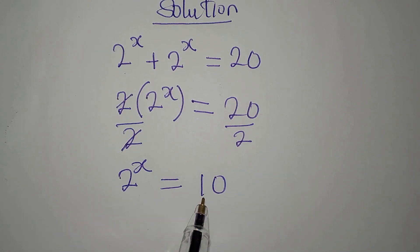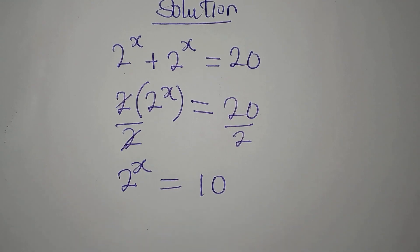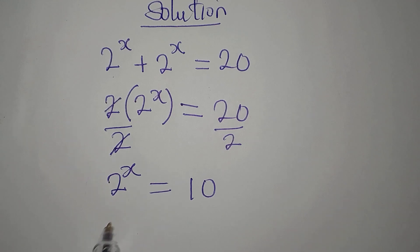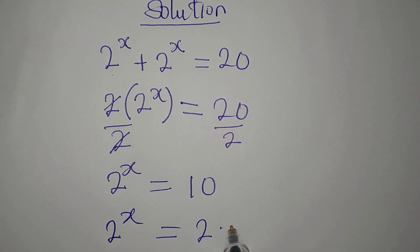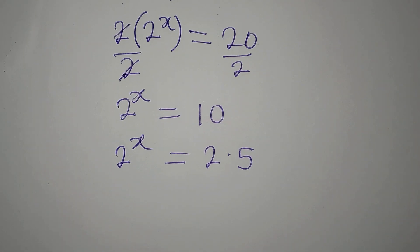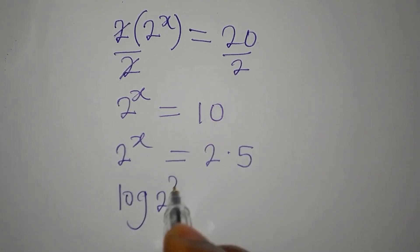We now look at the 10 here. If it is a number we can write in base 2, we use that directly. If not, we take the log of both sides. Since 10 is just 2 times 5 and cannot be written as a power of 2, we take the log of both sides.